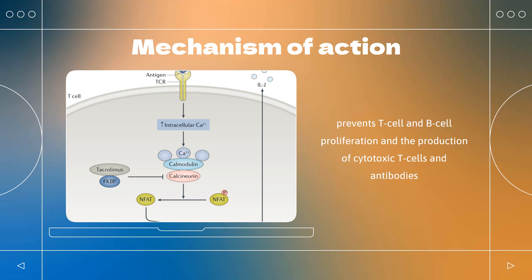IMPDH normally converts inosine monophosphate (IMP) to xanthine monophosphate (XMP), a metabolite contributing to the production of guanosine triphosphate (GTP). GTP is an important molecule for the synthesis of ribonucleic acid (RNA), deoxyribonucleic acid (DNA), and protein. As a result, mycophenolate mofetil reduces de novo production of guanosine nucleotides, interfering with the synthesis of DNA, RNA, and protein required for immune cell production.